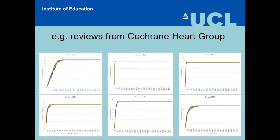In some reviews we've found all relevant citations after screening a very small proportion of studies. For example, the review on the top left and the one on the bottom right show we maxed out after screening only about a quarter or a third of citations. For many of these simulation studies, it's typical to find that after simulating manual screening over 50% of citations, we've already found all of the relevant studies.